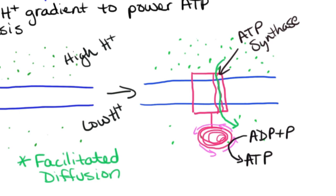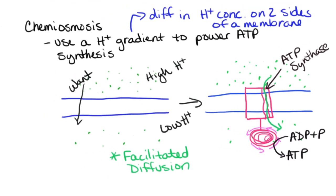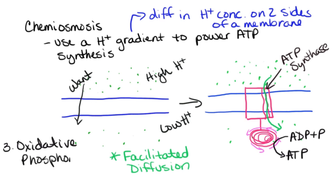We are utilizing a hydrogen ion gradient and the fact that these hydrogens want to flow across the membrane. When they flow across, they make this wheel turn, which provides the energy for this ATP synthesis reaction. This is the way that we're going to make ATP in the third stage of respiration, which is what we refer to as oxidative phosphorylation.